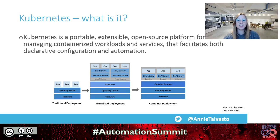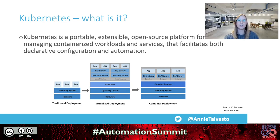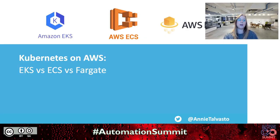If you're wondering which Kubernetes services or deployment approaches on AWS to use, no worries. I'll take you through a few considerations. We'll cover Amazon EKS, AWS ECS, and AWS Fargate today. EKS and AKS are very similar if you're familiar with the Azure world.